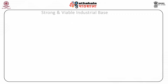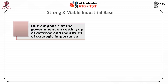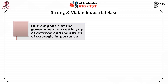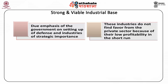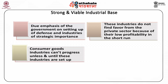The role played by the public sector in the Indian economy can be explained in the forthcoming points. Strong and viable industrial base: The industrial base of the economy had been strengthened because of the due emphasis of the government on setting up of defence and industries of strategic importance such as iron, steel, heavy engineering, machine tools and equipment. These industries do not find favour from the private sector because of their low profitability in the short run. Moreover, consumer goods industries cannot progress unless and until these industries are set up.